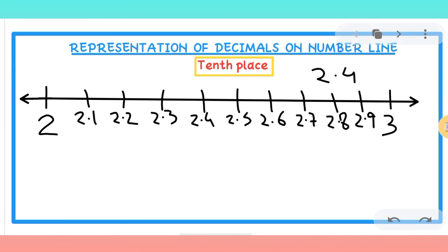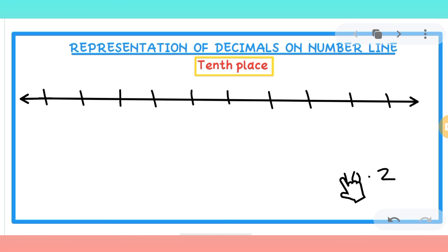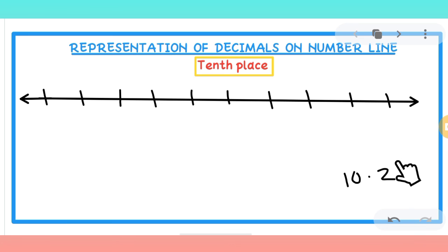Let's take one more example. If we have the number 10.2, we need to represent it on the number line. We look at the number before the tenths place, which is 10. So 10.2 is greater than 10 but less than 11, and it will come in between 10 and 11.